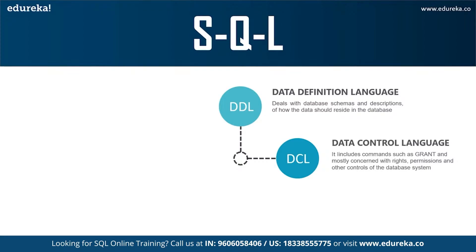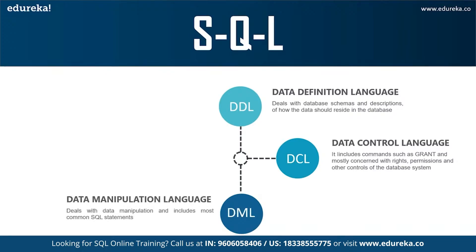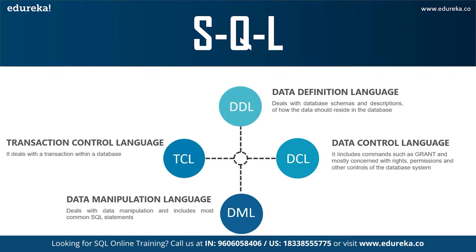DDL is very popular and extensively used compared to other commands. The next command is DCL — Data Control Language — which allows you to control access to the database. DCL commands include GRANT, which gives user access privileges to the database, and REVOKE, which withdraws those privileges. The next command is DML — Data Manipulation Language — which allows you to access and manipulate data: inserting, updating, deleting, and retrieving data from the database. Finally, TCL — Transaction Control Language — deals with database transactions; TCL commands include COMMIT, ROLLBACK, SAVEPOINT, and SET TRANSACTION.